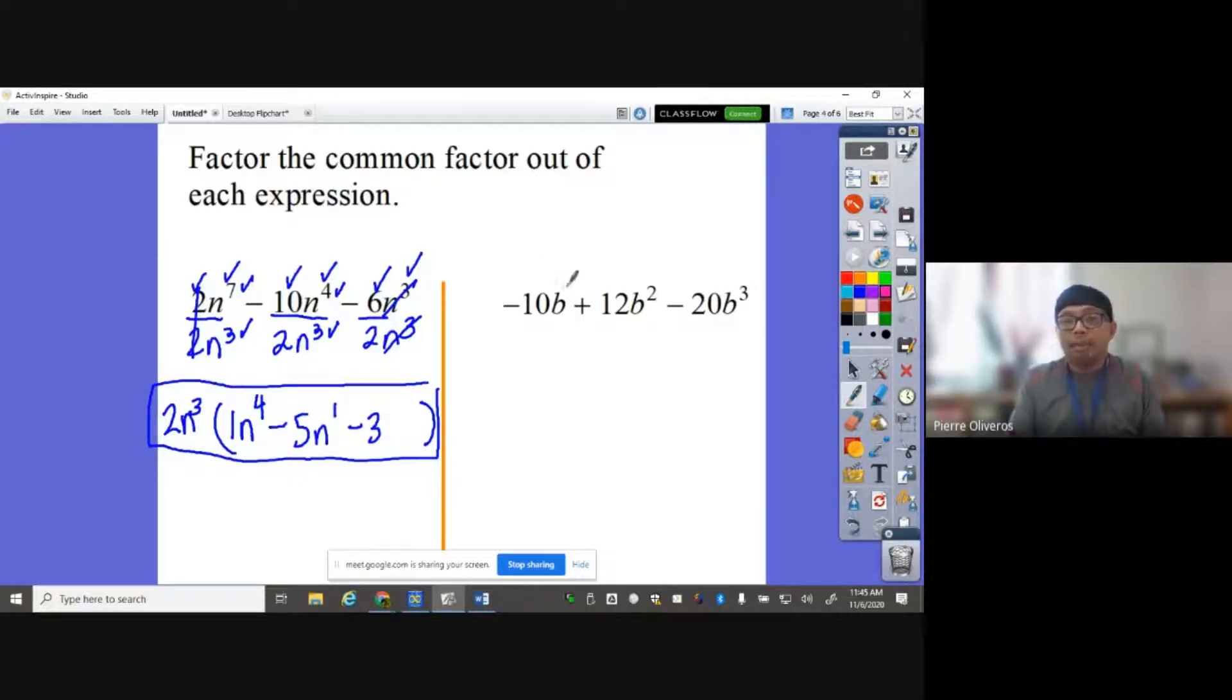Next. Negative 10b plus 12b squared minus 20b cubed. I expect you all, when you factor out a GCF, keep it positive value. Let the terms inside the parentheses be negative. It's not going to change your problem if you make the GCF negative. But for uniformity, let's keep the GCF positive here. So negative 10, 12, 20. The GCF there is... no, I'm wrong. I didn't see that. The GCF here, 10, 12, 20 is 2.